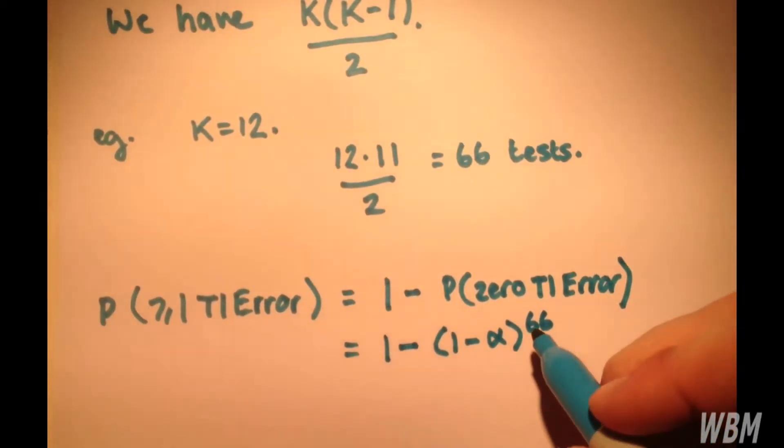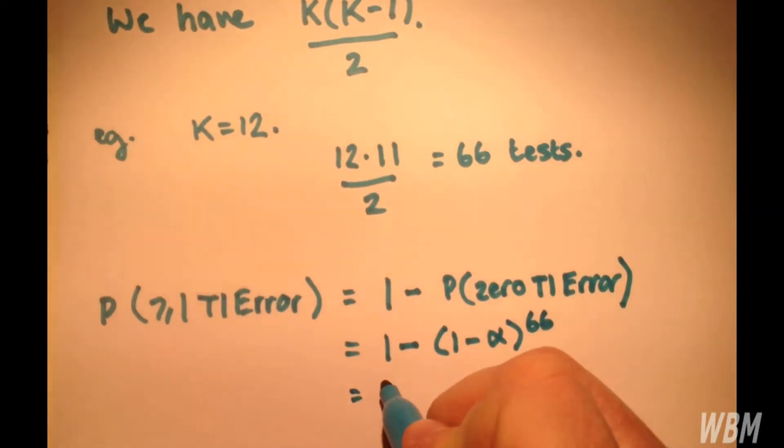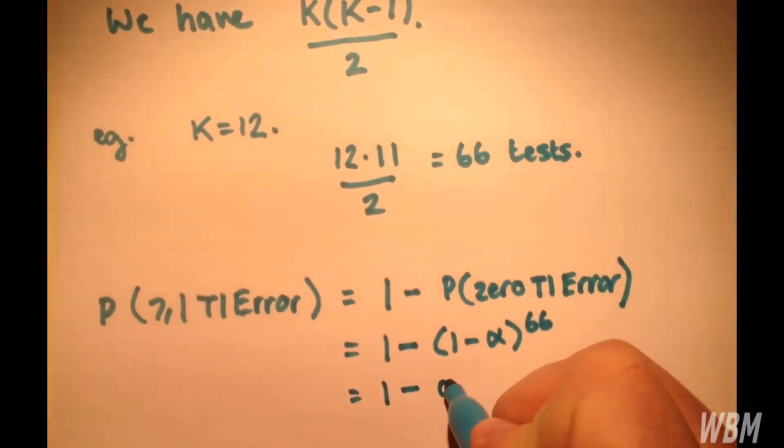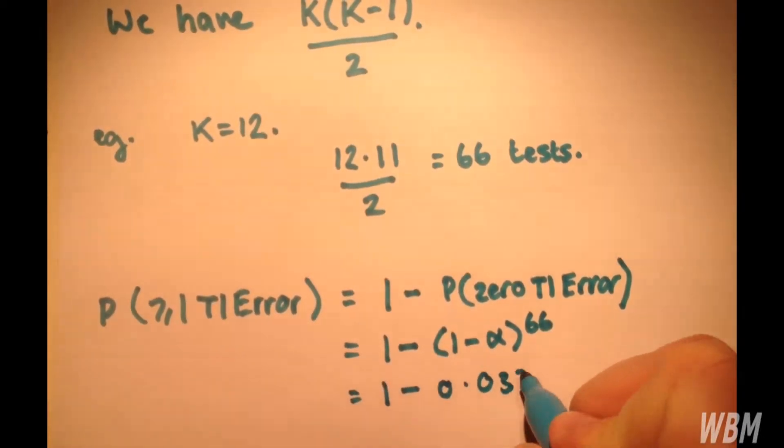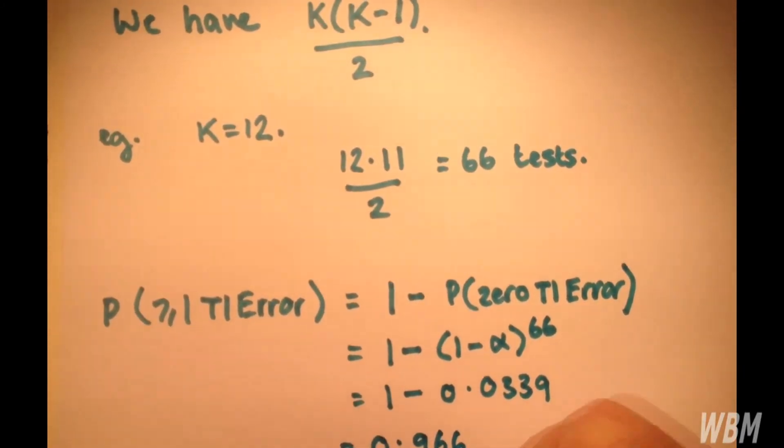because that's how many times we're doing this. And that actually works out at 1 minus 0.0339, which is 0.966 or 0.97.